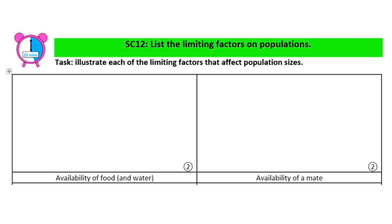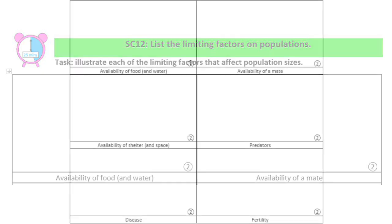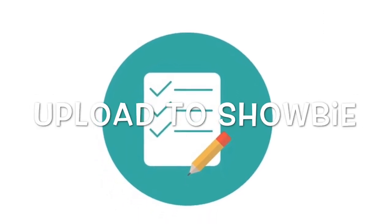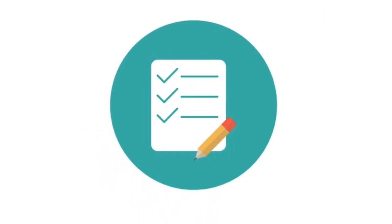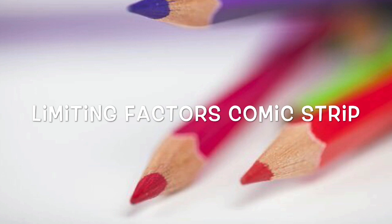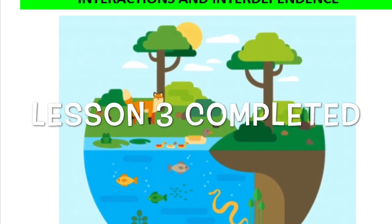The last thing is SC12: list the limiting factors on populations. In the table, I've written the six things that can limit the population of a particular species. All you have to do is draw a simple picture to illustrate each factor — I would like you to colour them in, please. Please upload SC12 to SHOBY into week two; the assignment is called 'Limiting Factors Comic Strip.' And that is Lesson 3 completed — well done, guys!